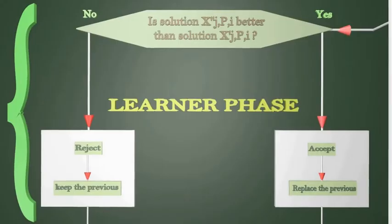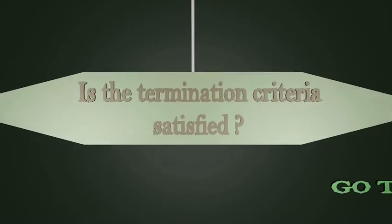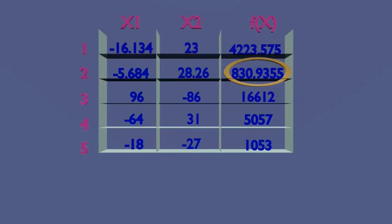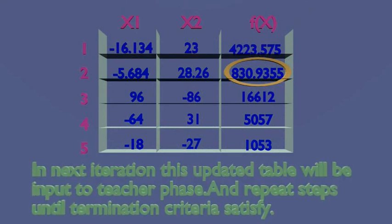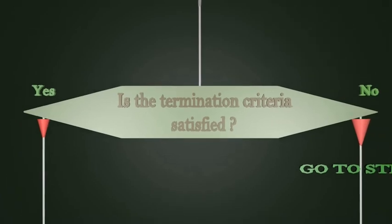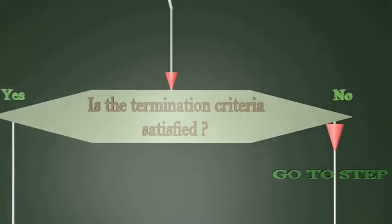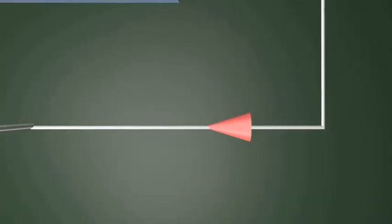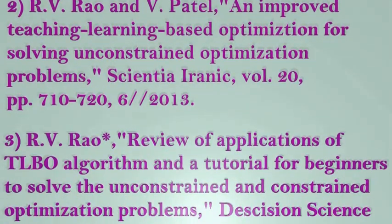Now we will move to the last step: is the termination criteria satisfied or not? It can be noted that the minimum value in our randomly generated table is 1053 and it gets reduced to 830.9355. As the number of iterations are 1000, no better value of the objective function may be obtained in the next few iterations. In the next iteration, this updated table will be input to the teacher phase, and steps repeat until the termination criteria is satisfied. If the termination criteria is satisfied, we will report the optimal solution; if not, we will go back to step 2, which is calculating the mean of each design variable. Here are some references for the TLBO algorithm.